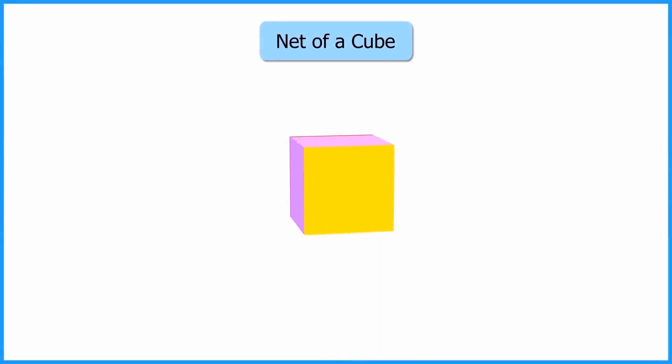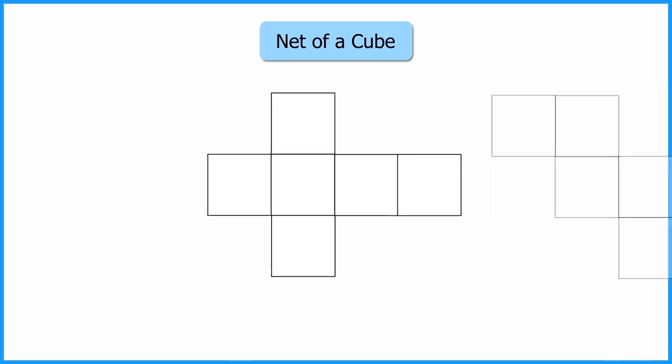We all know that a cube has six faces. Now on unfolding the cube, its net looks like this. Now kids, tell me, is this the only way we can unfold a cube or a box? No, we can do it in other ways as well.